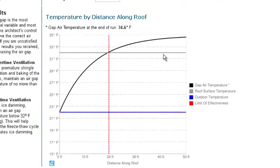As we scroll down and take a closer look at this, you'll see that the gray line represents the roof surface temperature, the blue line the outdoor temperature, and this black curved line here is the air gap temperature.